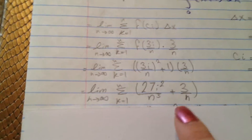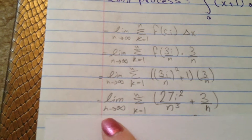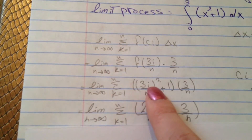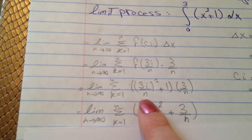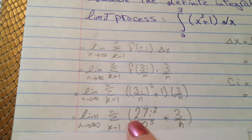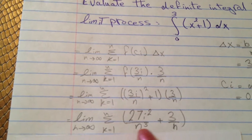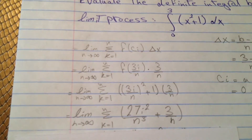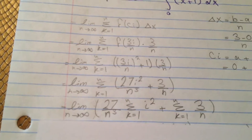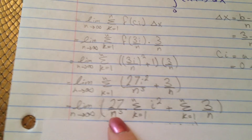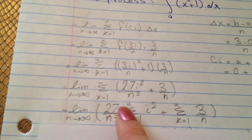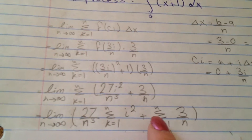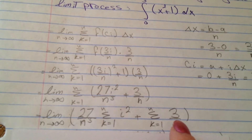So now we have to multiply it. Limit as n goes to infinity, sum from k equals 1 to n. We have 3 squared, which is 9, divided by n squared. We multiply it times 3, and we get 27i squared divided by n cubed, plus 3 over n — that we multiply by 1. So now we have limit as n goes to infinity: 27 divided by n cubed times the sum from k equals 1 to n of i squared, plus the sum from k equals 1 to n of 3 over n.